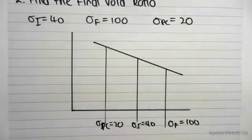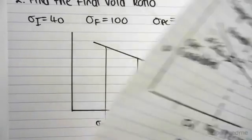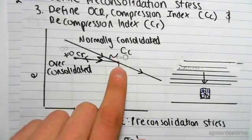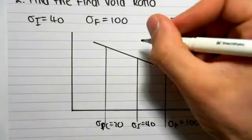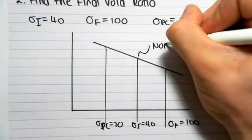So what that means is that we are along the normally consolidated line. We're along this line here. So our soil, this is normally consolidated.